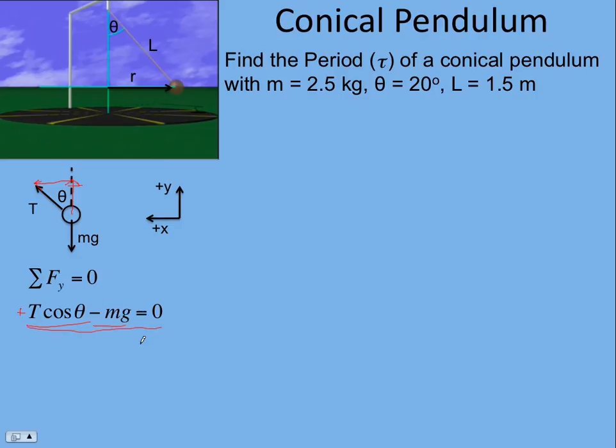And so that's one of the equations we need. We need a lot more, so let's keep working. The next obvious step is to look in the x direction. Sum of the forces in the x equals ma, and there is acceleration in the x direction, and it is a centripetal acceleration.